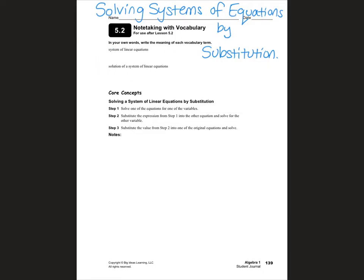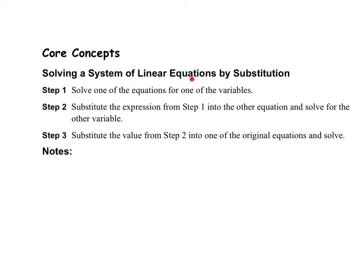These vocabulary words are exactly the same as 5.1, so I'm not going to write them down. Here are the steps to solving a system of linear equations by substitution. Step 1: solve one of the equations for one of the variables. It does not matter which equation or variable you choose — whichever is easier is the one you should choose. Step 2: substitute the expression from step 1 into the other equation and solve for the other variable. Step 3: substitute the value from step 2 into one of the original equations and solve. It doesn't matter which original equation you choose — just do whichever is easier.